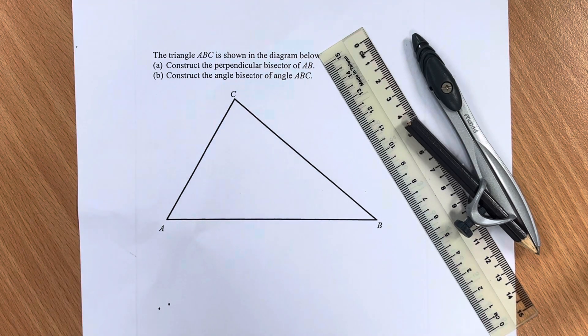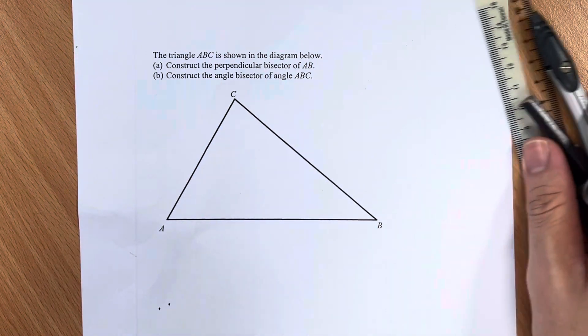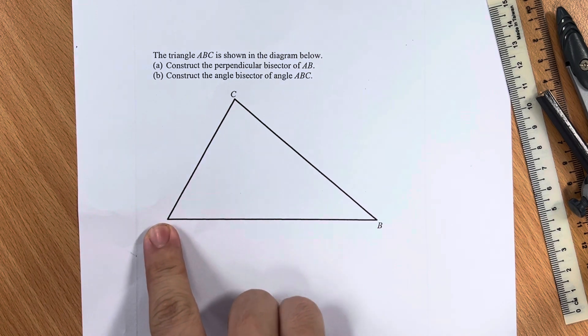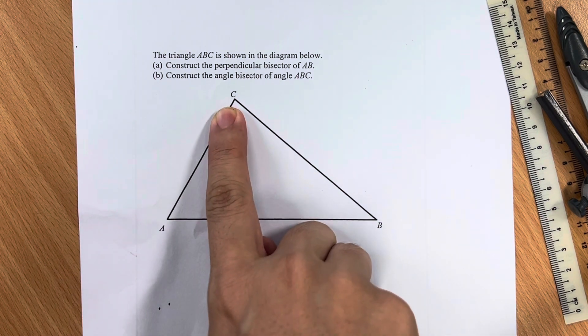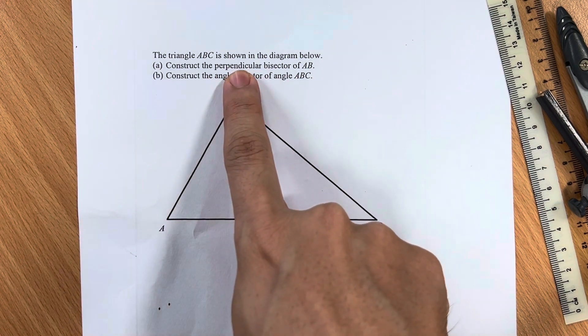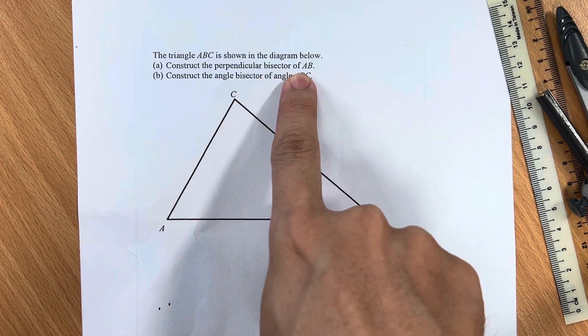Hello everyone, welcome to this video where we are required, given this triangle ABC, to construct the perpendicular bisector of AB.